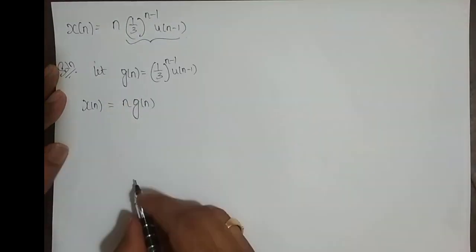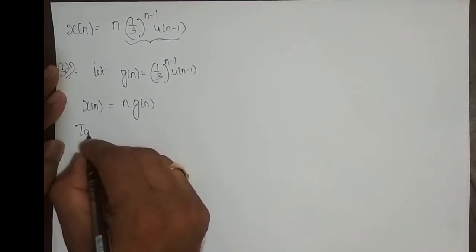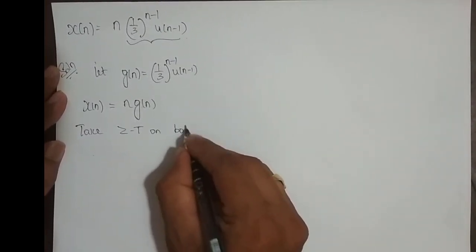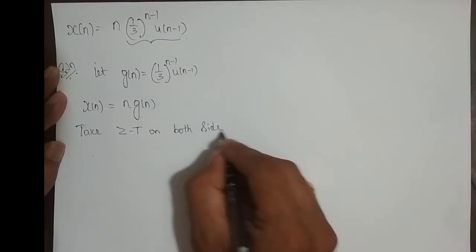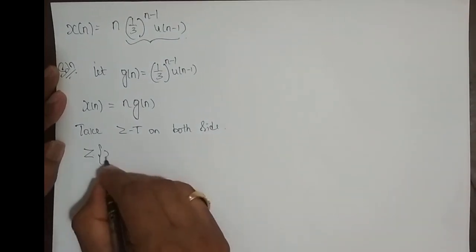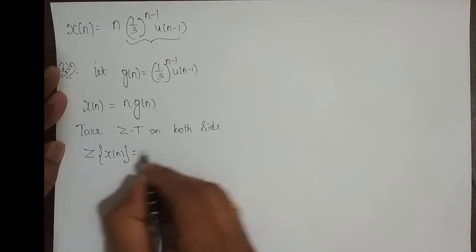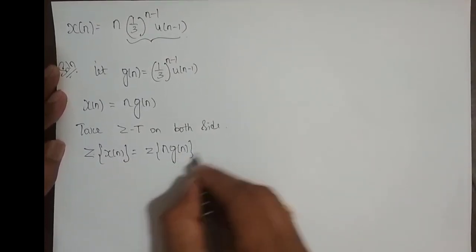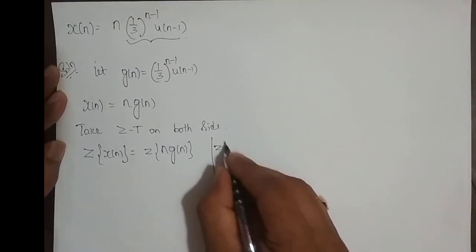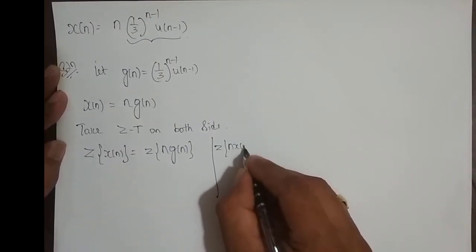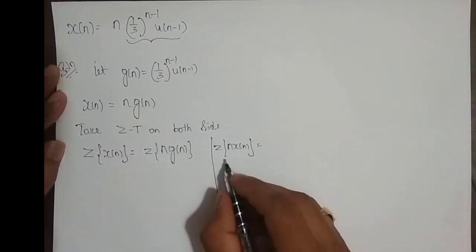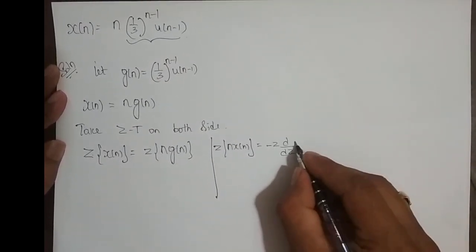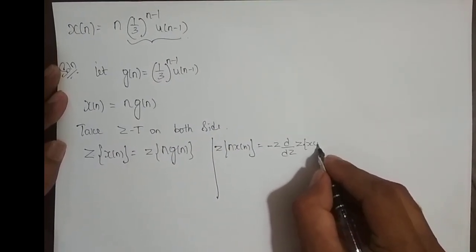g of n is this part. Now I will take Z-transform on both sides. Z-transform of x of n is equal to Z-transform of n into g of n. Now, what is this property? Z-transform of n into x of n — it is multiplication by ramp. What is Z-transform of n into x of n? It is minus z into d by dz of Z-transform of x of n.